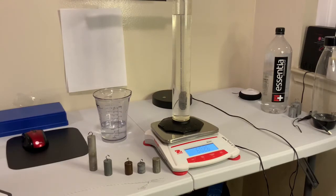Now step six, it says using the string, submerge a sample into the middle of the graduated cylinder so that it is completely submerged but not touching the bottom of the cylinder.